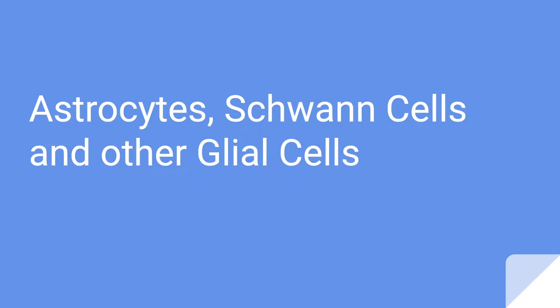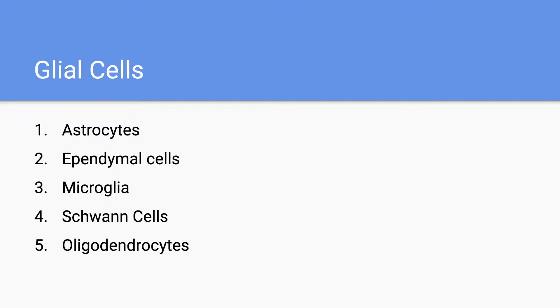Hi everyone. In this video I'm going to quickly list and name the function of a few different glial cells, so let's get started. We have five main glial cells to discuss. These include astrocytes, ependymal cells, microglia, Schwann cells, and oligodendrocytes.